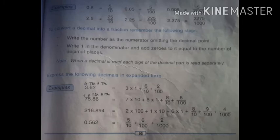So, if we say example, page 95. Express the following decimals in expanded form. First example, first, 3.62.